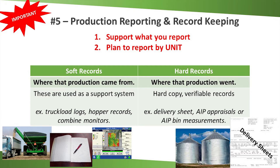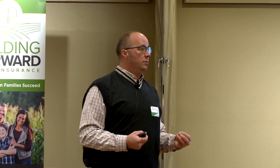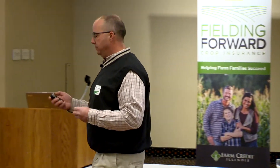We always encourage you to come back once you empty those bins if numbers are different, and prove up your APH with what the actual production was. Soft records are still not delivered to an end destination, but records you have showing you hauled 12 truckloads off a farm into a bin. Hard records are delivery sheets to an elevator. Your crop insurance is based off your word — they don't always ask for that information until you have a claim, but you better be able to prove it if you have a claim or are in an audited situation.